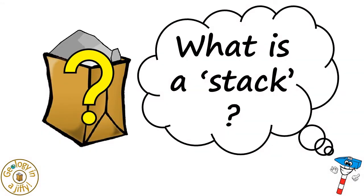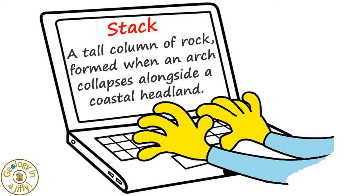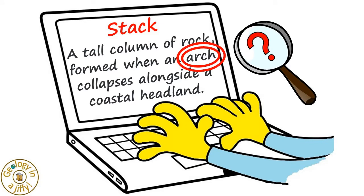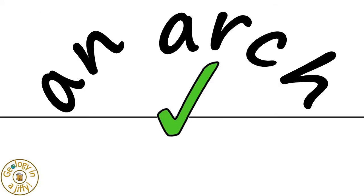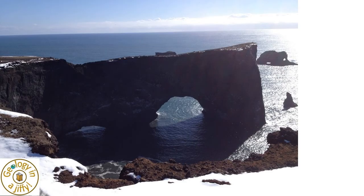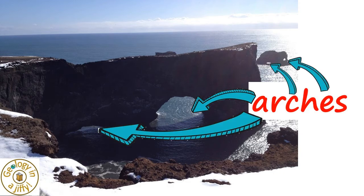What is a stack? A stack is a tall column of rock formed when an arch collapses alongside a coastal headland. But what is an arch? An arch is an upward arcing hole through something. Here is a large arch in the Dyrholaey Peninsula in southern Iceland. This area shows various sized arches in the cliffs of the peninsula and the offshore islands.